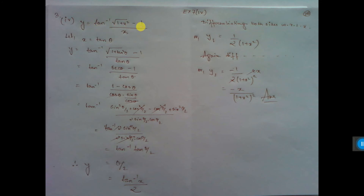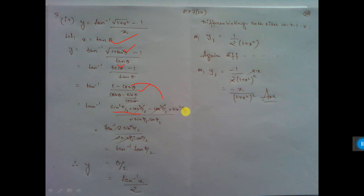Next sum: y = tan⁻¹ [√(1+x²) − 1) / x]. If you consider x = tan θ, then 1 + tan²θ = sec²θ. Root and square cancel, leaving sec θ − 1. sec means 1/cos, tan means sin/cos. Taking LCM gives (1 − cos θ)/sin θ. Write 1 as sin²(θ/2) + cos²(θ/2) and cos θ as cos²(θ/2) − sin²(θ/2) — but the minus in front makes it plus. This gives 2sin²(θ/2) in the numerator and sin θ = 2sin(θ/2)cos(θ/2) in the denominator. One sin(θ/2) cuts, leaving sin/cos = tan. tan⁻¹ and tan cancel, leaving θ/2. Putting θ = tan⁻¹ x gives y = (tan⁻¹ x)/2.